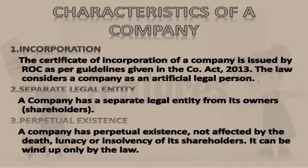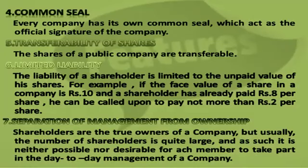Second, separate legal entity — a company has a separate legal entity from its owners, i.e., shareholders. Third, perpetual existence — a company has perpetual existence not affected by the death, lunacy, or insolvency of its shareholders; it can be wound up only by the law. Fourth, common seal — every company has its own common seal which acts as the official signature of the company. Fifth, transferability of shares — the shares of a public company are transferable. Sixth, limited liability — the liability of a shareholder is limited to the unpaid value of his shares. For example, if the face value of a share is Rs.10 and a shareholder has already paid Rs.8 per share, he can be called upon to pay not more than Rs.2 per share. Seventh, separation of management from ownership — shareholders are the true owners of a company, but usually the number of shareholders is quite large and as such it is neither possible nor desirable for each member to take part in the day-to-day management of the company.